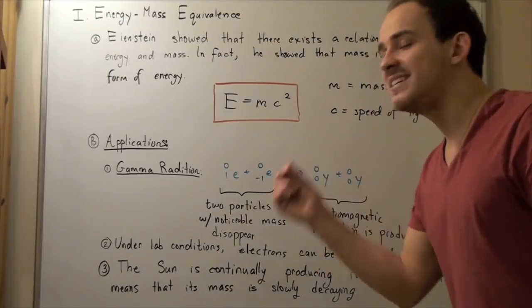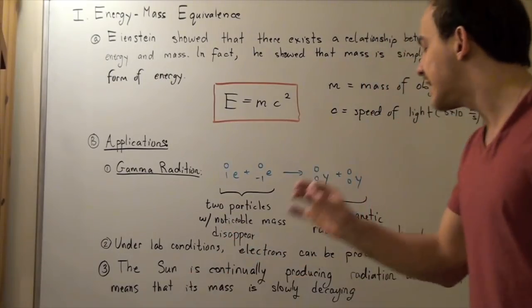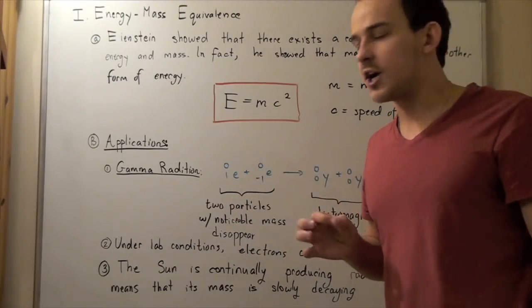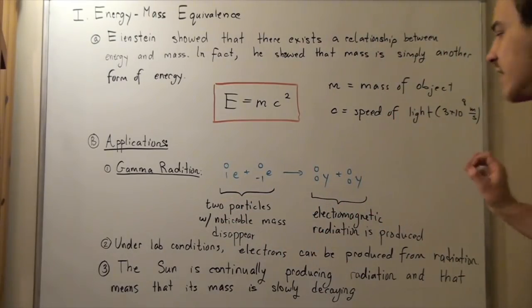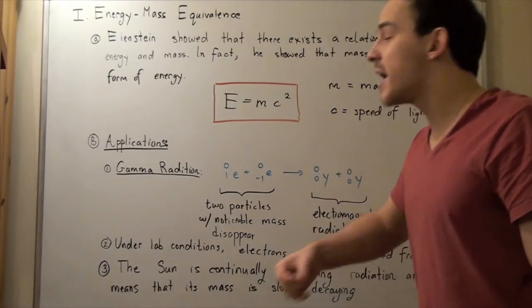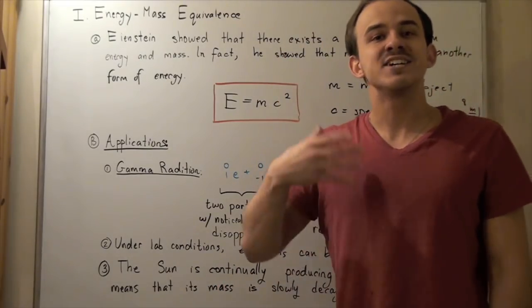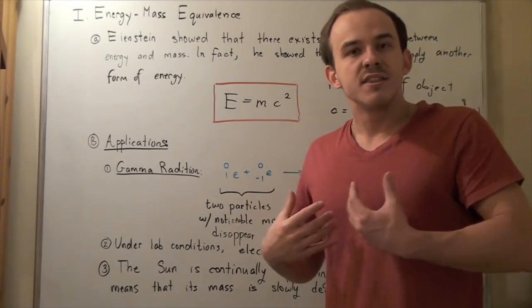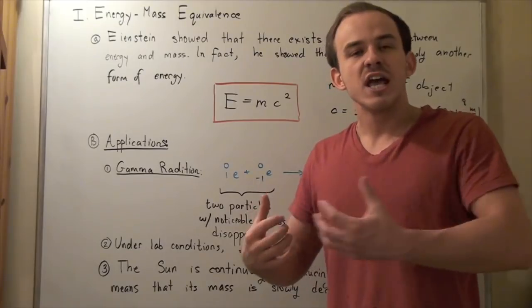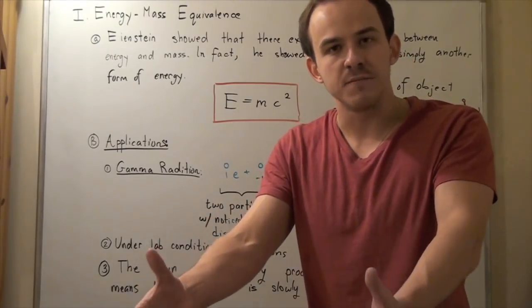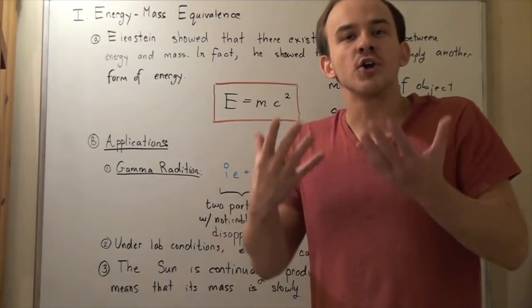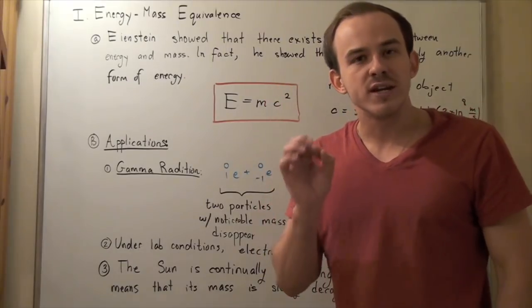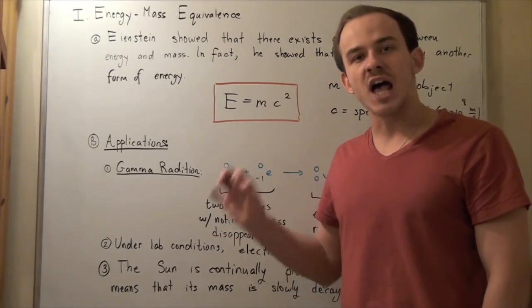The sun is continually producing electromagnetic radiation in the form of light that we receive on the earth. And that means that the mass of our sun is continually decreasing. Because the sun is continually producing this light, this electromagnetic radiation, it's releasing energy, which is allowing the earth to sustain itself, and this energy that is being released is decreasing the mass of the sun.